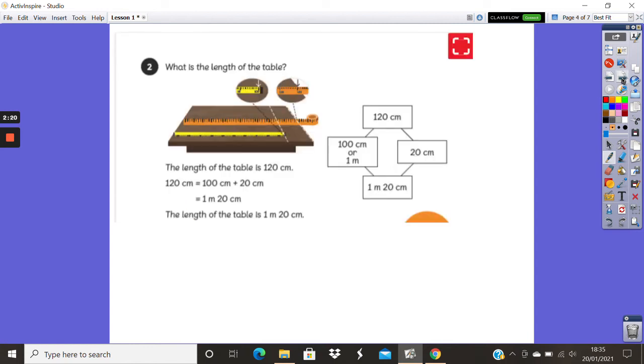So what is the height of the table? If the table length is 120 centimeters, 120 centimeters would be 100 centimeters add 20 centimeters equals 1 meter 20 centimeters. Because we know that 100 centimeters equals 1 meter.